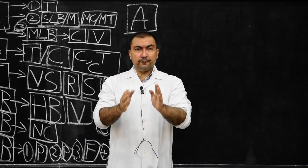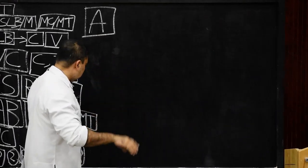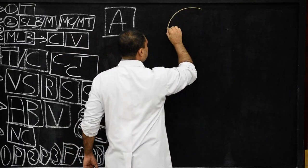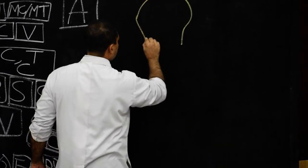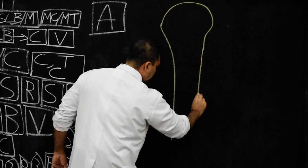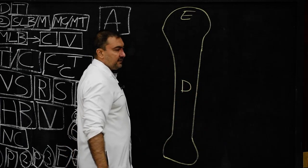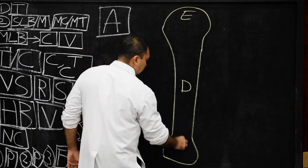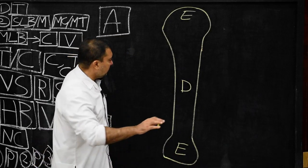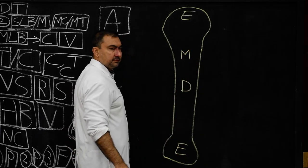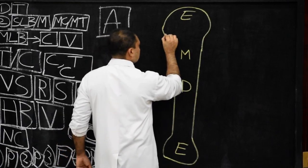Now we come to the general anatomical features of a typical long bone. We will draw a simple line diagram of the typical long bone. This typical long bone has an upper end, lower end, and a shaft. The upper end is known as the epiphysis, the shaft is the diaphysis, and the lower end is also an epiphysis. We will also mention the metaphysis here.